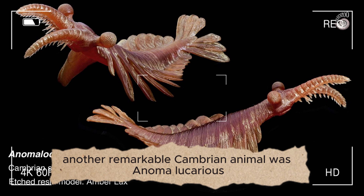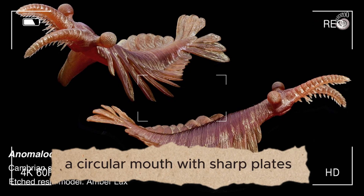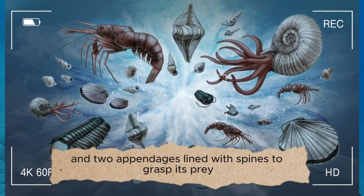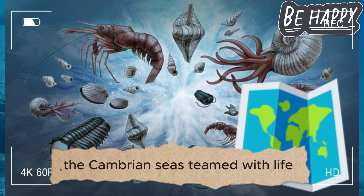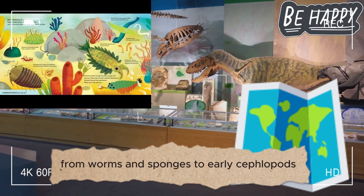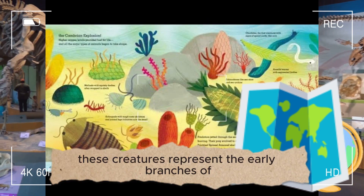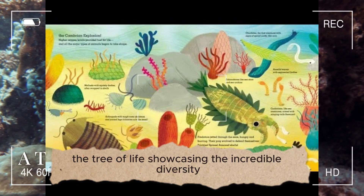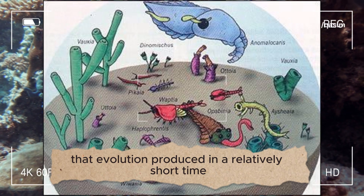Another remarkable Cambrian animal was Anomalocaris, a fearsome predator. It had large stalked eyes, a circular mouth with sharp plates, and two appendages lined with spines to grasp its prey. The Cambrian seas teemed with life, from worms and sponges to early cephalopods — the ancestors of squid and octopuses. These creatures represent the early branches of the tree of life, showcasing the incredible diversity that evolution produced in a relatively short time.